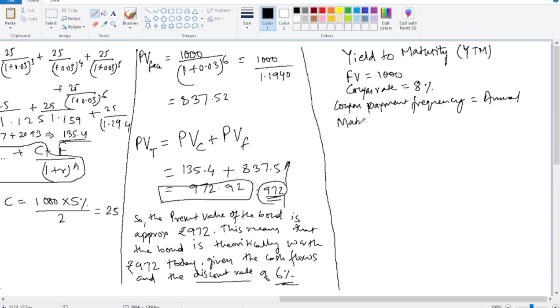Time to maturity is say five years. And the current market price of bond, now this price is given this time. Last time we calculated it, this time we have the market price is given. So market price of bond is given say 950.